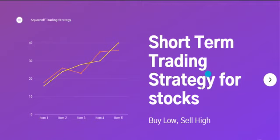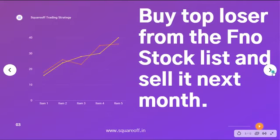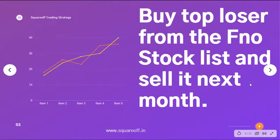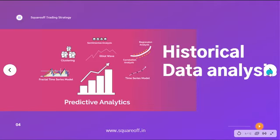This is specifically focused on a mean reversion strategy where we find the stock from the FNO list which has lost the most — whichever is the top loser. We are going to buy that stock and sell it next month. The idea behind the strategy is to find out what would happen if we buy only the top loser from the FNO stock list every month and sell it the next month, and what the overall returns would look like if we keep repeating this process.